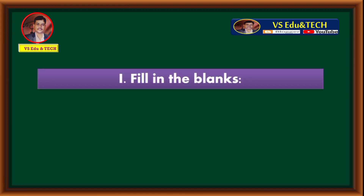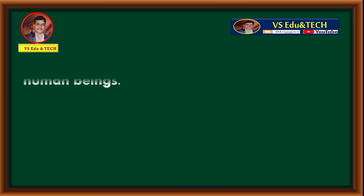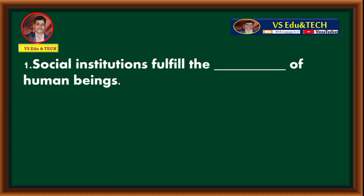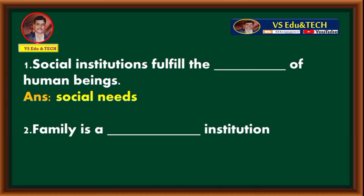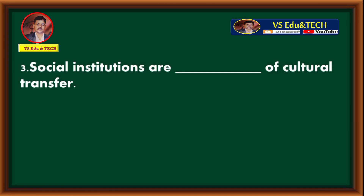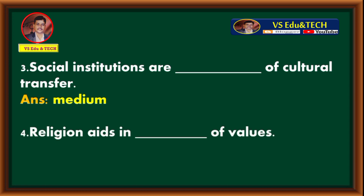Fill in the blanks. First: social institutions fulfill the dash of human beings — answer is social needs. Second: family is a dash institution — answer is social. Third: social institutions are dash of cultural transfer — answer is medium. Fourth: religion aids in dash of values — answer is spread.